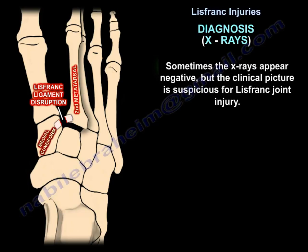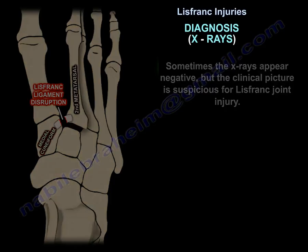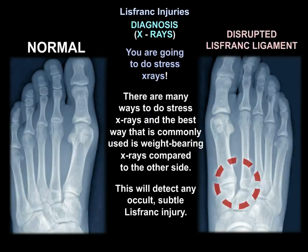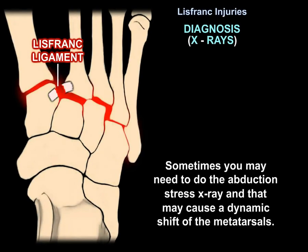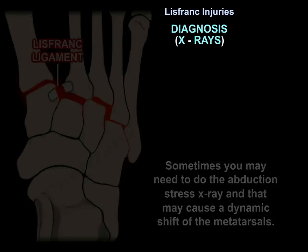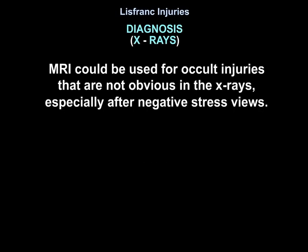Sometimes x-rays appear negative but the clinical picture is suspicious for Lisfranc injury. In that case, perform stress x-rays. The best and most commonly used method is weight-bearing x-rays compared to the contralateral side, which will detect any occult subtle Lisfranc injury. Abduction stress x-rays may also be used to cause a dynamic shift of the metatarsals. MRI can be used for occult injuries not obvious on x-rays, especially after negative stress views.